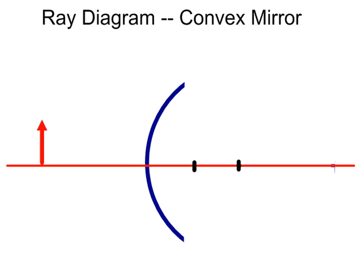This video is going to help us practice drawing a ray diagram for a convex mirror. You can see the red arrow represents our object. You can see it's a convex mirror because the mirror is curved away from the red arrow.